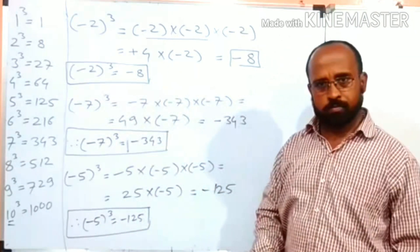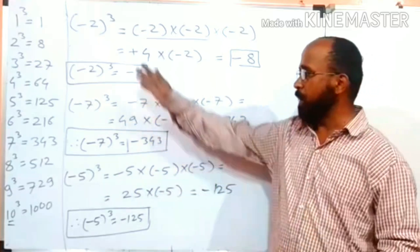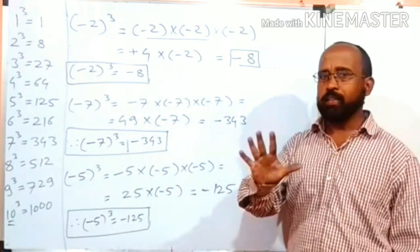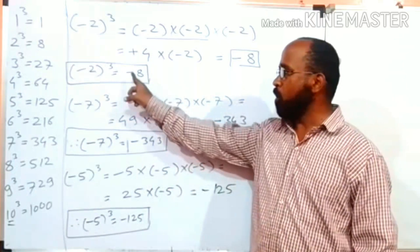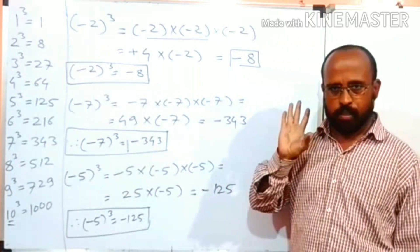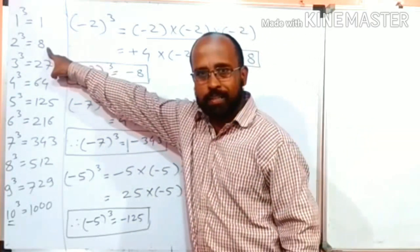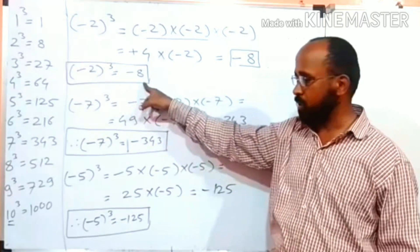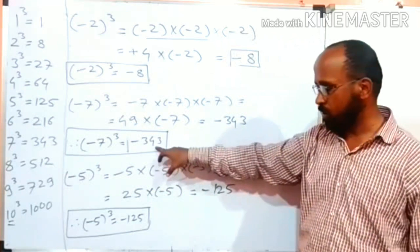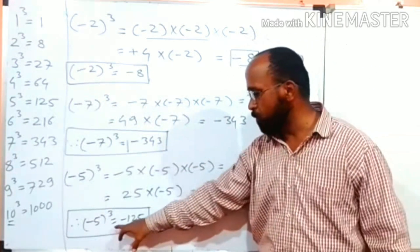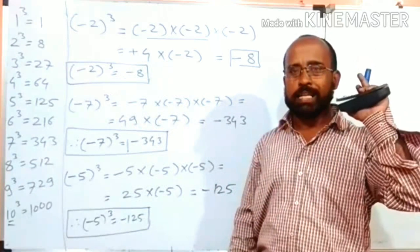Minus 2 cubed is minus 8. Minus 7 cubed is minus 343. Minus 5 cubed is minus 125. Can you see any pattern? The answer is always negative. This means the cube of a negative number is always negative — that is the first thing. Second thing: cube of 2 is 8, cube of minus 2 is minus 8; cube of 7 is 343, cube of minus 7 is minus 343; cube of 5 is 125, cube of minus 5 is minus 125. So directly, we can write the cube of the number and just give a negative symbol to it.